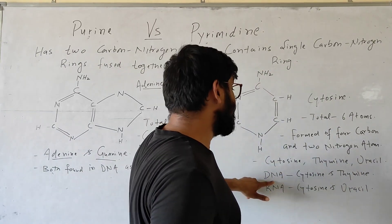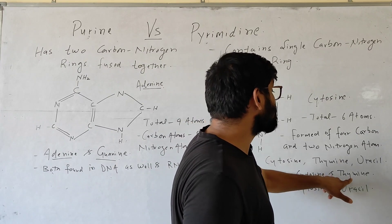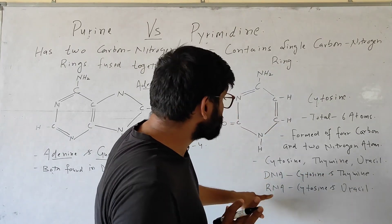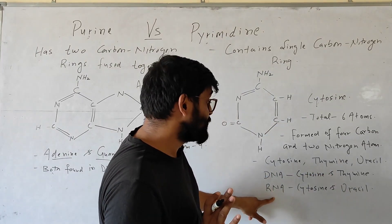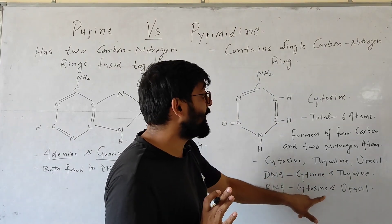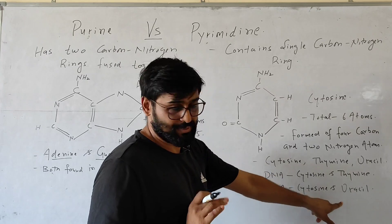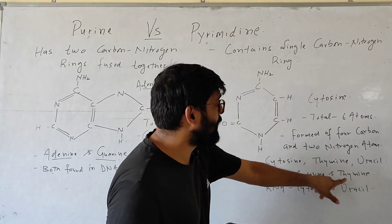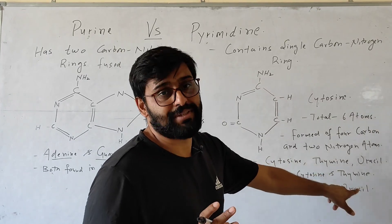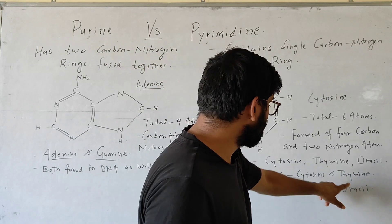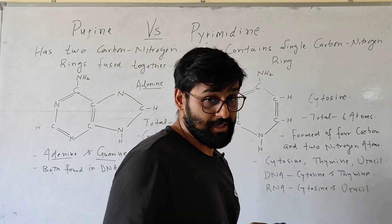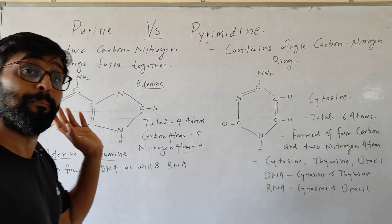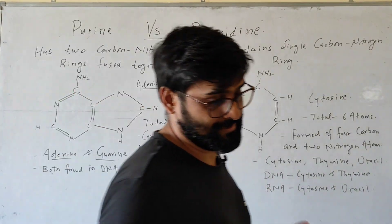In the case of DNA, cytosine and thymine are present. But in the case of RNA, cytosine and uracil are present. In RNA, thymine is absent — in place of thymine, uracil is present. So this is the difference between Purines and Pyrimidines.